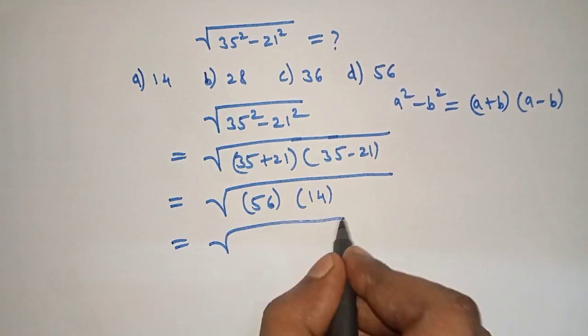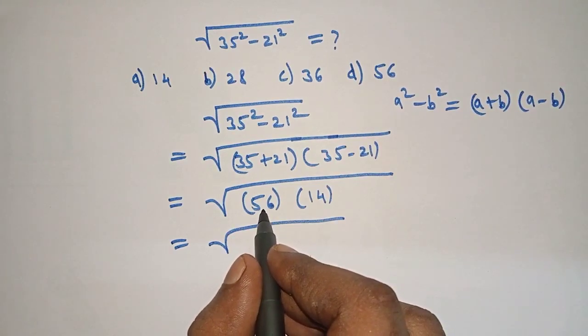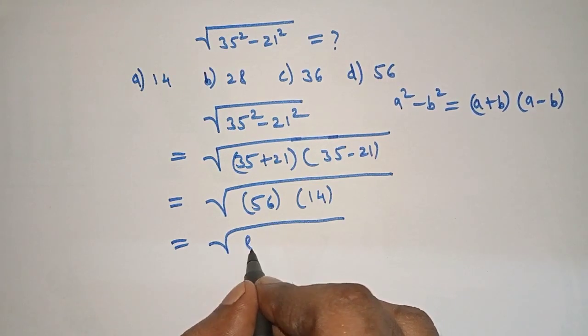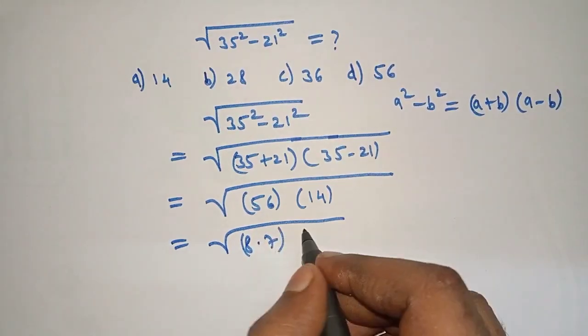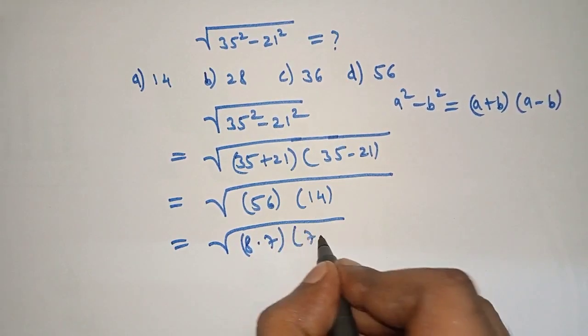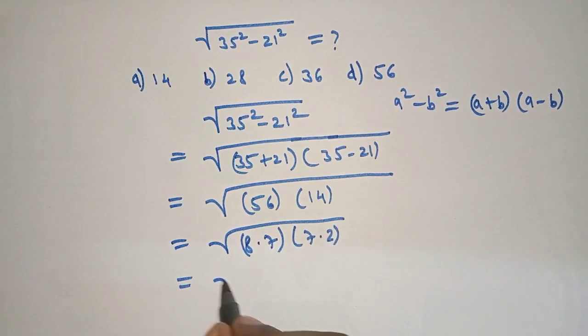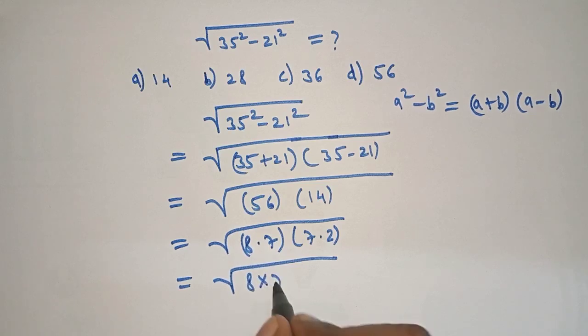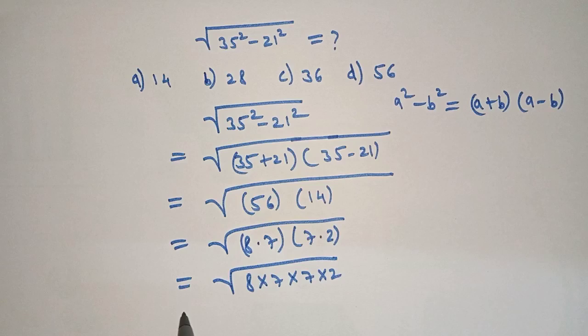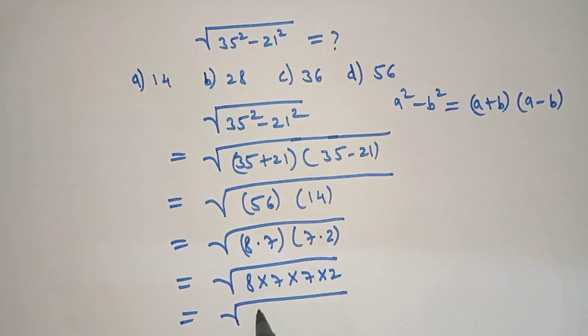Which is equal to square root, we can write 56 as 8 times 7 and 14 as 7 times 2. Now we can write 8 into 7 into 7 into 2. Now it will be equal to 7 times 7 is 49 and 8 times 2 is 16.